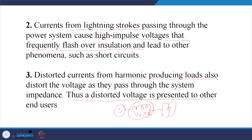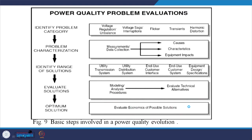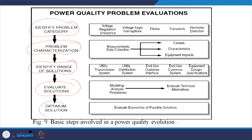A distorted voltage is presented to the end user, raising the question of who is responsible — the utility or the neighbor. This is a matter of perception. There is a power quality problem evaluation chart. You have to first identify the problem category, then characterize the problem — for example, if it is a short-term phenomena it is a voltage sag — then identify the range of solutions, evaluate solutions, and find the optimal solution.